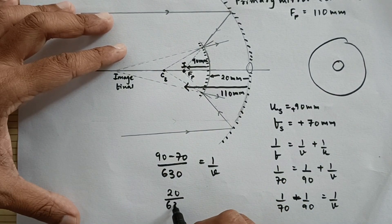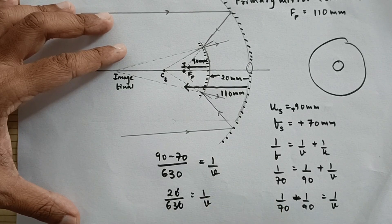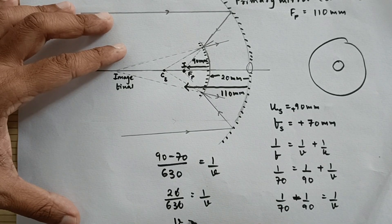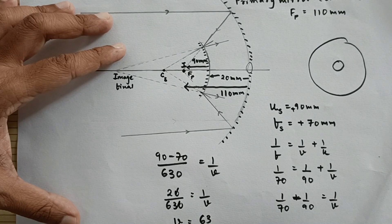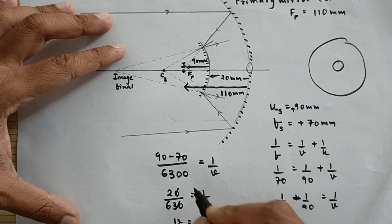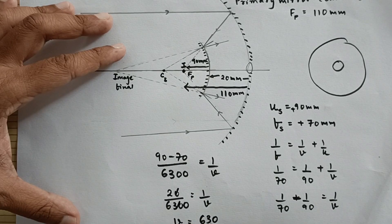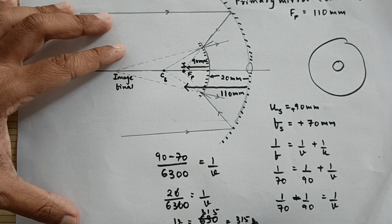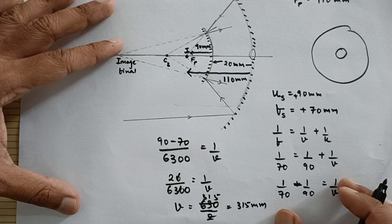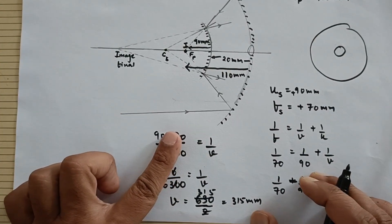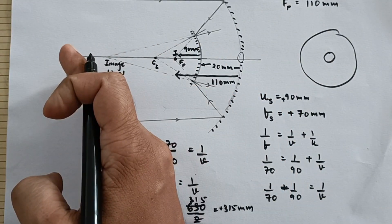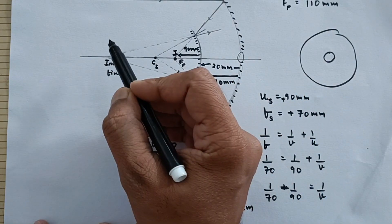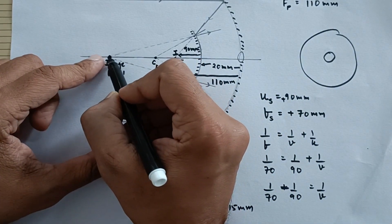So 20 upon 630 is equal to 1 upon v. And on reversing this one, v is equal to, we get 63 by... okay I made an error here, should be double zero again like this. So it will be 630 by 2, so it will be 315. So this is 315 mm. Please note all distances are in millimeters. Now you have to understand this very carefully that this distance is plus. So that means the image is also formed on the same side of the object, because in the direction of incident ray the image would be formed. So the image, final image, is formed over here.